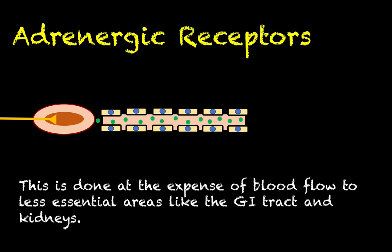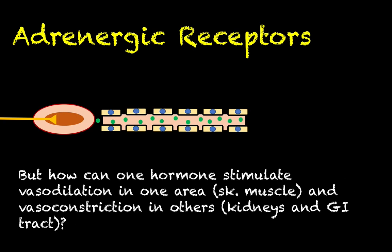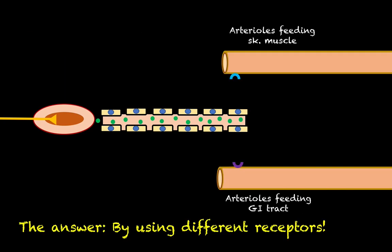The challenge is that if we're going to increase blood flow to skeletal muscle, we have to take blood flow away from some other tissues. We do this at the expense of blood flow to less essential places like the GI tract and the kidneys — if you're running from a grizzly bear, you don't really need to be digesting food or filtering blood to make urine. The answer is that we use two different types of receptors that both respond to epinephrine.